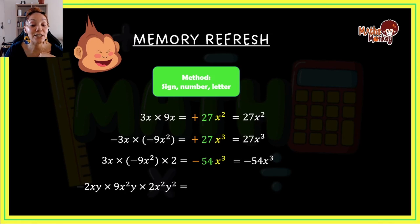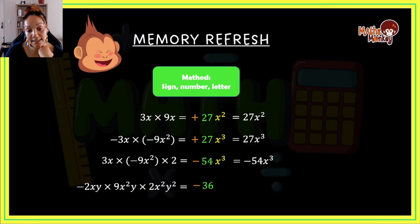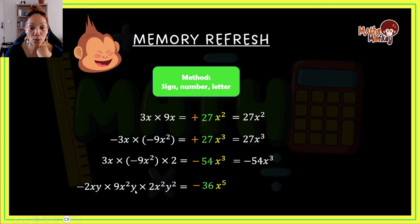For the next example: negative times positive times positive gives negative. The numbers: 2 times 9 times 2 gives 36. This question has two variables. For the x's: 1x, 2x, and 2x together give x to the 5. For the y's: 1y, 1y, and 2y give y to the 4. So my final answer is negative 36x to the 5, y to the 4.